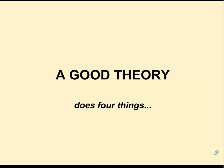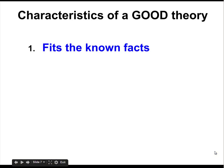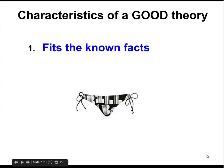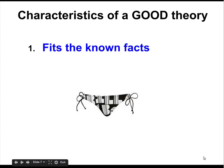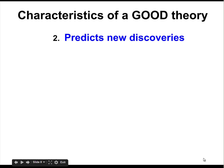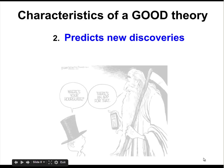A good theory does four things. First, it's going to fit the known facts. A theory should be comprehensive and exclude as little of the observable data as possible. If important information is omitted, the theory will be flawed from the beginning — as in the example of the antisocial children. The next characteristic of a good theory is that it should help us predict the behavior we're trying to understand and even predict new discoveries. So much of our work in psychology produces research results that lead to more questions and more discoveries.